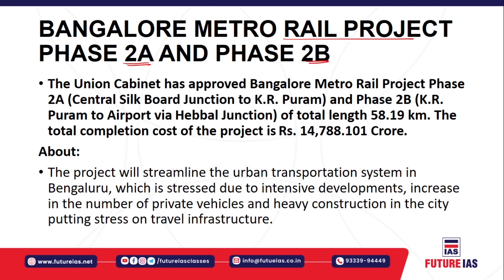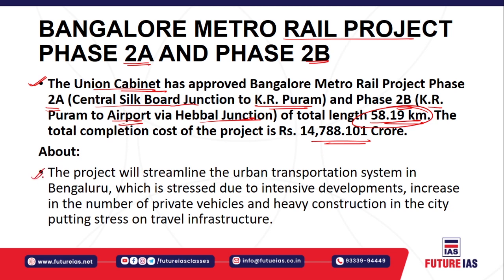The second news is about the Bangalore Metro Rail Project Phase 2A and Phase 2B. The Union Cabinet has approved both phases. Phase 2A will be constructed from Chennai Silk Road Junction to KR Puram, and Phase 2B will go from KR Puram to the airport via Habbel Junction. The total length will be around 58.19 kilometers, with a total investment of approximately ₹14,788 crore rupees.